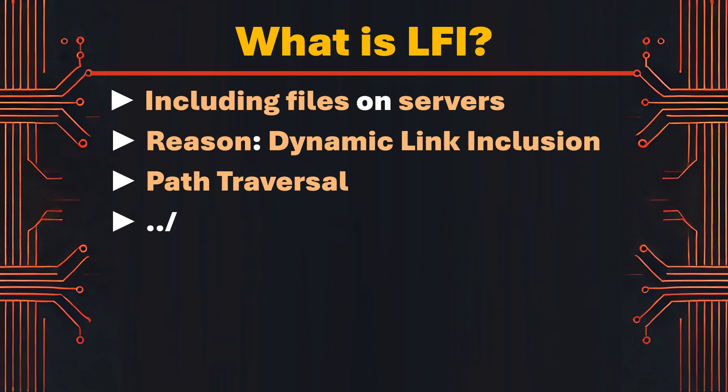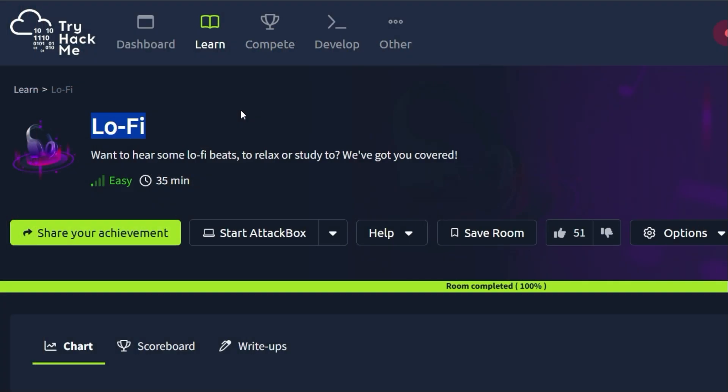For example, a path used in a file inclusion URL parameter might allow the attacker to access the Unix /etc/passwd file, which contains user account information. A challenge where we can learn how to perform a local file inclusion vulnerability by using path traversal is LoFi on TryHackMe.